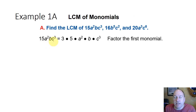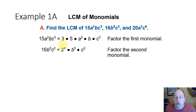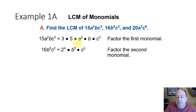15a squared b c to the third factors into 3 times 5 — the prime factorization of 15 — times a squared times b times c to the third. The second term, 16b to the fifth c squared, factors into 2 to the fourth times b to the fifth times c squared.